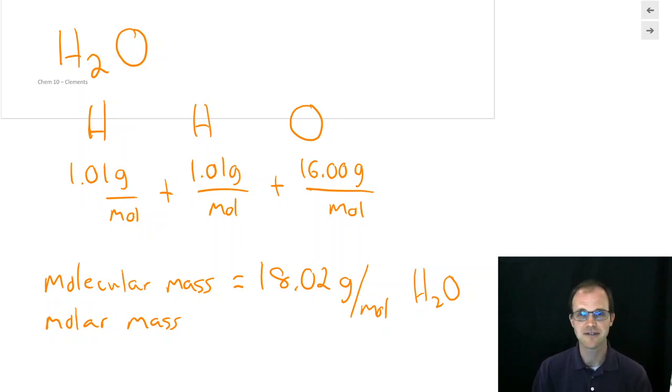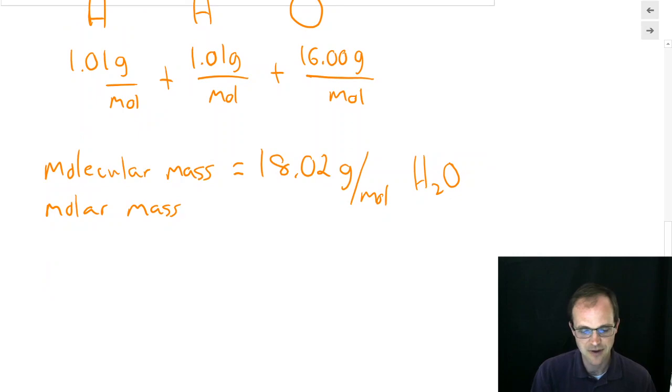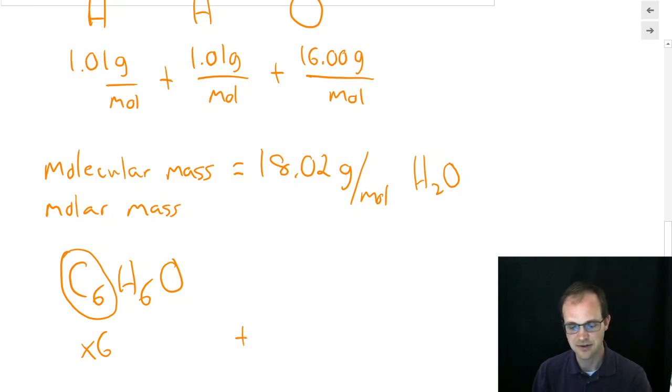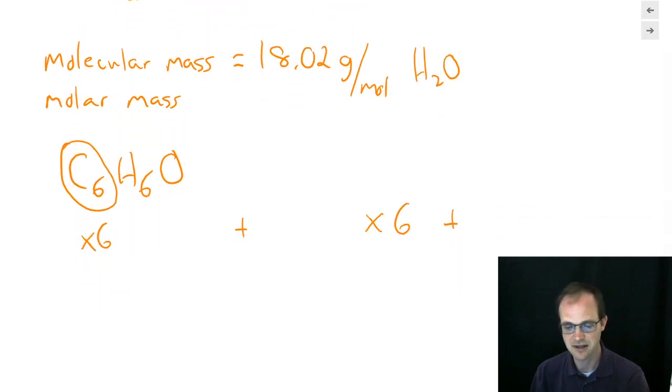You want to do it for a molecule that's got 40 different atoms in it all connected together, and 8 of these and 12 of these and 500 of these, you can do it. You just multiply each one out. If I wanted to find the mass of C6H6O, what would I do? I'd take the atomic mass of carbon and multiply it by 6. I'd take the atomic mass of hydrogen and multiply it by 6. And I'd take the atomic mass of oxygen and multiply it by 1, because we only have one of them. So what is the atomic mass of carbon?